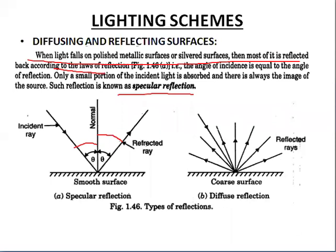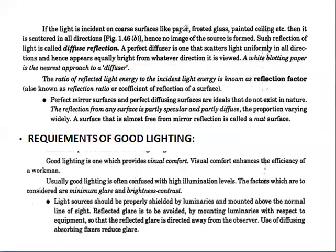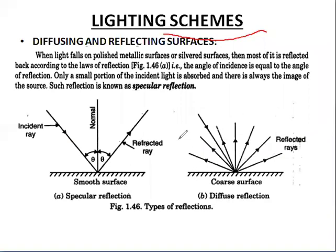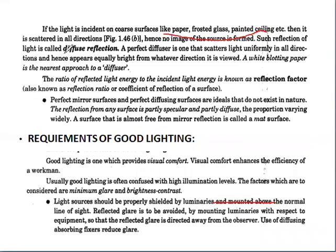But when light falls on a coarse surface — like paper, frosted glass, or painted ceilings — it is scattered in all directions. This type of reflection is called diffuse reflection. When the reflected ray goes only in one direction it is called specular reflection; when reflected in all directions it is called diffuse reflection. A perfect diffuser is one that scatters light uniformly in all directions and appears equally bright from whatever direction it is viewed.